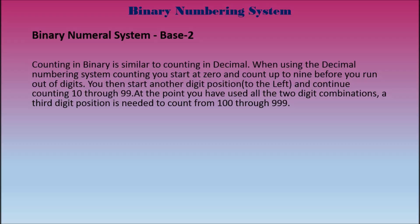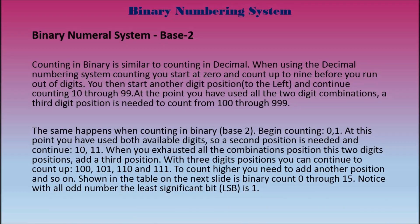Counting in binary is similar to counting in decimal. When using the decimal numbering system, you start at 0 and count up to 9 before you run out of digits. Then you start another digit position to the left and continue counting 10 through 99. At the point where you've used all your two-digit combinations, a third digit position is needed to count from 100 through 999. The same happens in binary, base 2: begin counting 0 then 1. At this point you've used both available digits, so a second position is needed — continue: 10, then 11. When you've exhausted all two-digit combinations, add a third position and continue: 100, 101, 110, and 111.